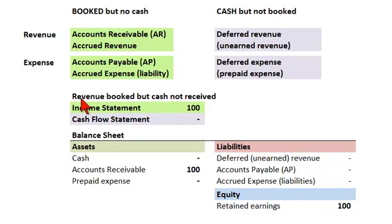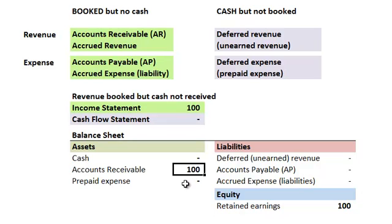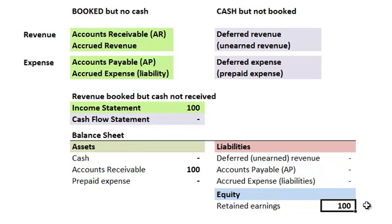In this first quadrant — booked but no cash — we have accounts receivable and accrued revenue. Here's an example: revenue is booked but the cash is not yet received. On the income statement we recognize, for example, $100, but nothing on the cash flow statement. On the balance sheet, accounts receivable goes up by $100 and retained earnings also goes up by $100 — assets equal liabilities plus equity. This transaction does increase working capital by $100.